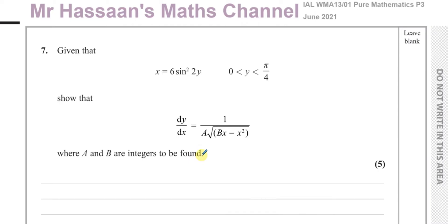It looks like we have to start off by differentiating. It's going to be difficult to make y the subject in a way that's easy to differentiate. So instead of finding dy/dx directly, we're going to find dx/dy, and then its reciprocal will give us dy/dx.